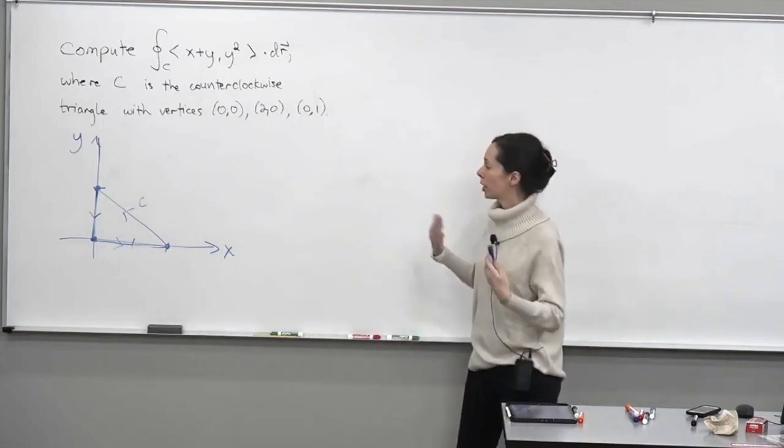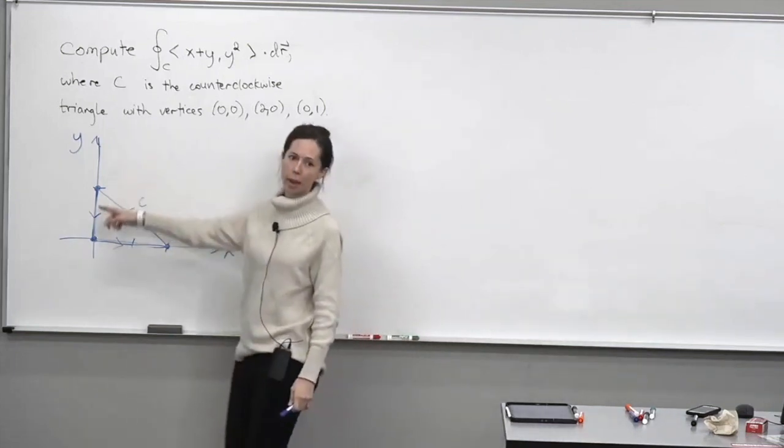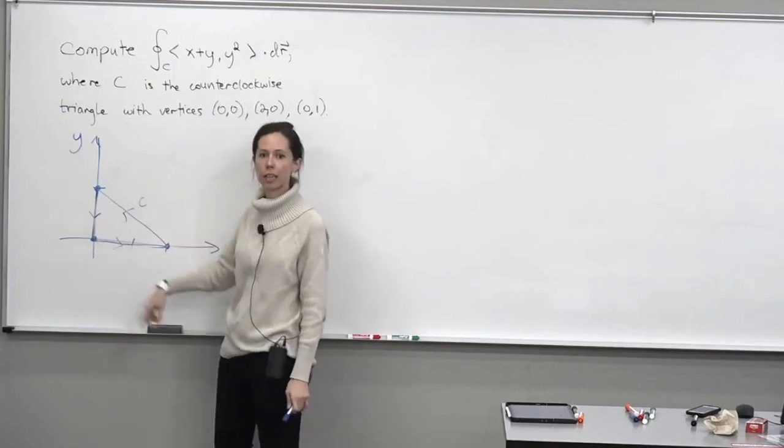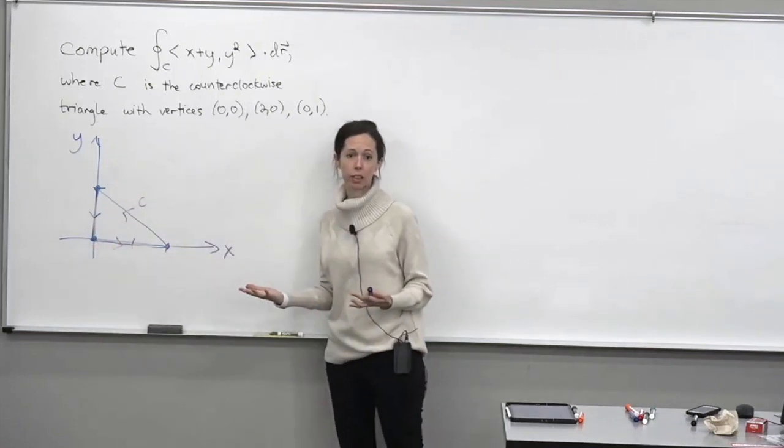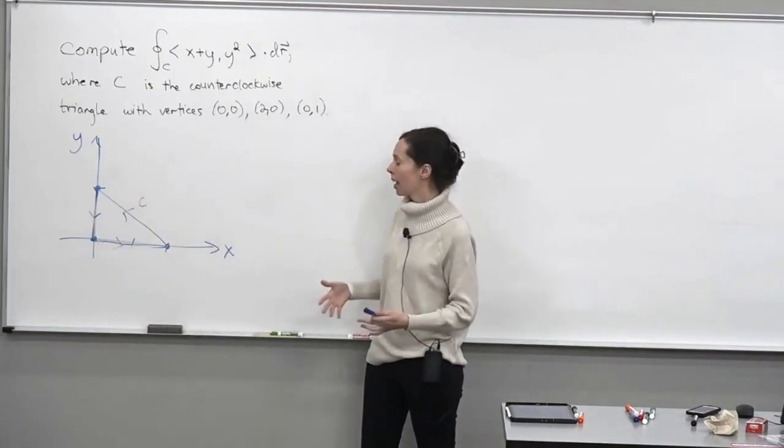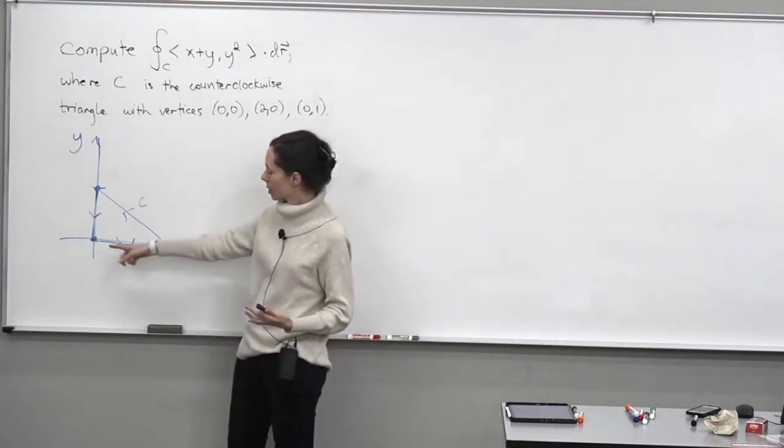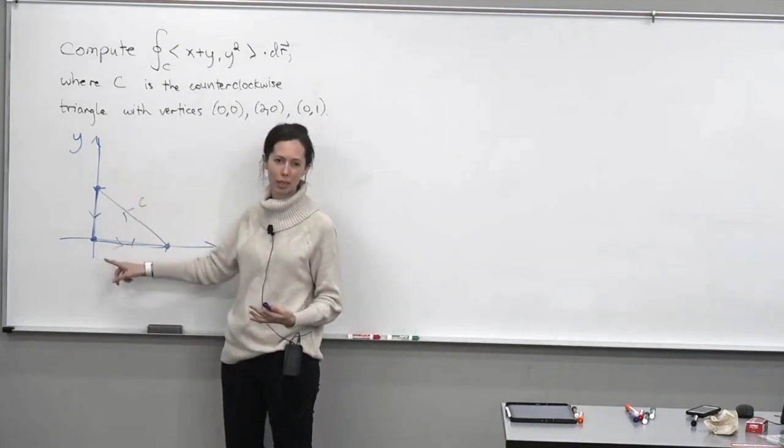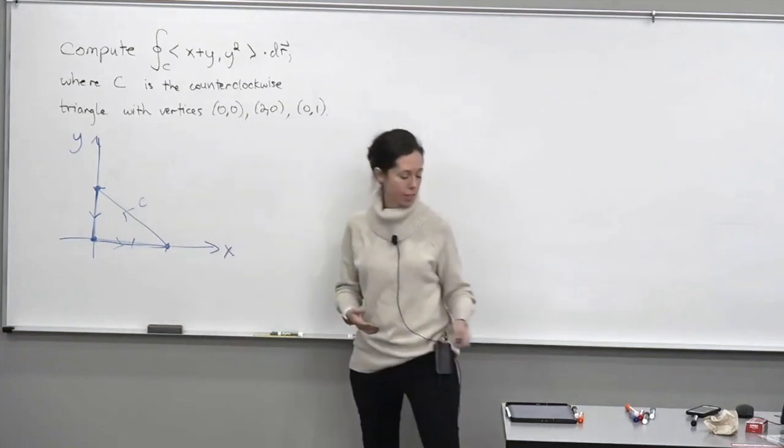Now, what we could do is parametrize the boundary of this region, this boundary curve C, and do this vector line integral in the usual way. However, that's not ideal here because the boundary would be done in three separate pieces. So instead, what we're going to do is apply Green's theorem.